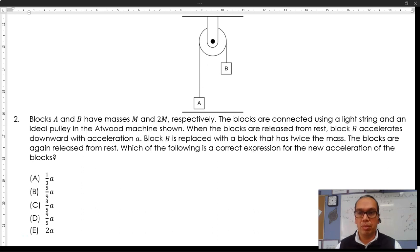Question 2. Blocks A and B have masses M and 2M respectively. The blocks are connected using a light string and an ideal pulley in the Atwood machine shown. When the blocks are released from rest, block B accelerates downward with acceleration A. Block B is replaced with a block that has twice the mass. The blocks are again released from rest. Which of the following is a correct expression for the new acceleration of the blocks?